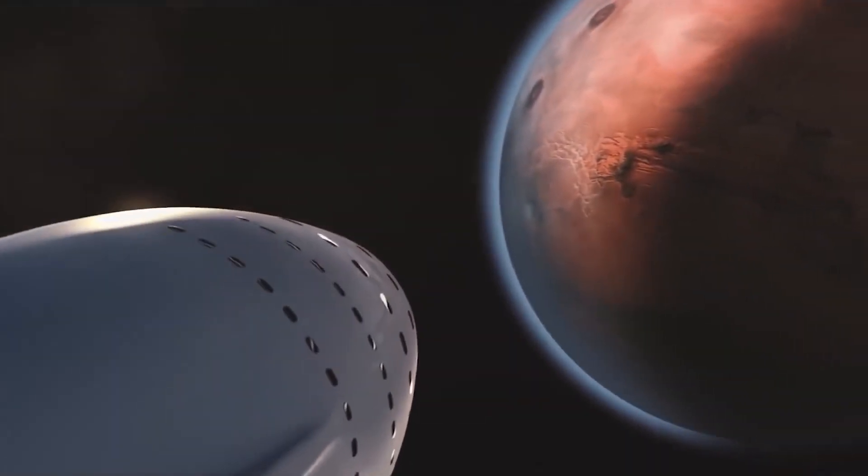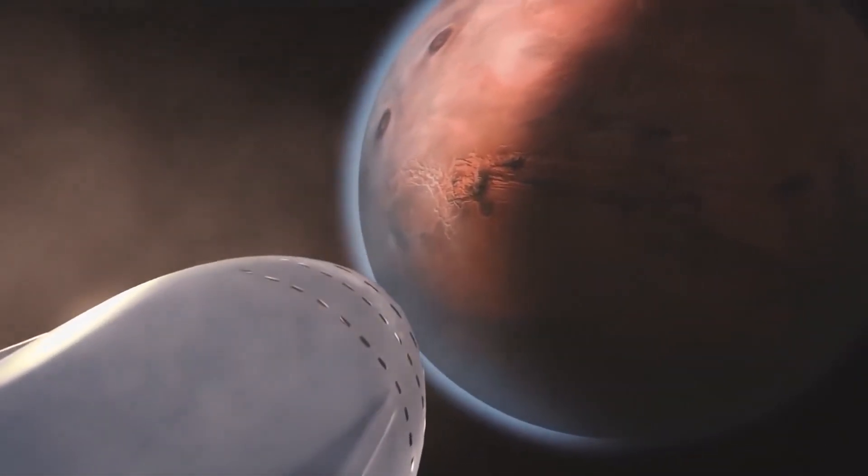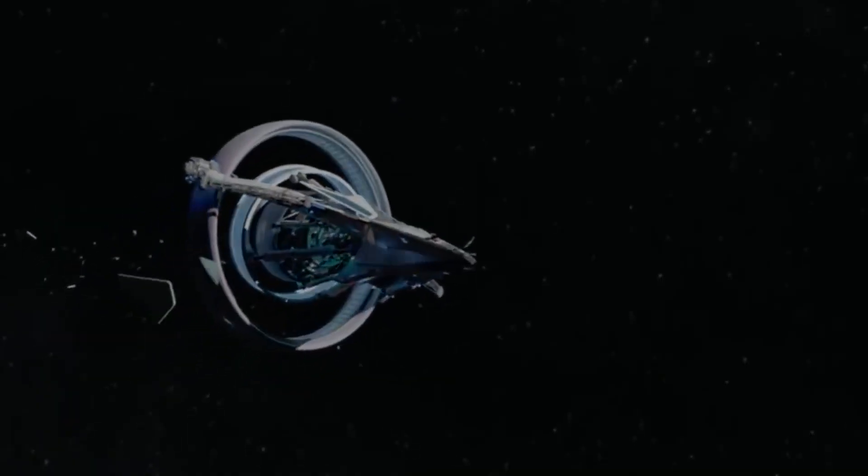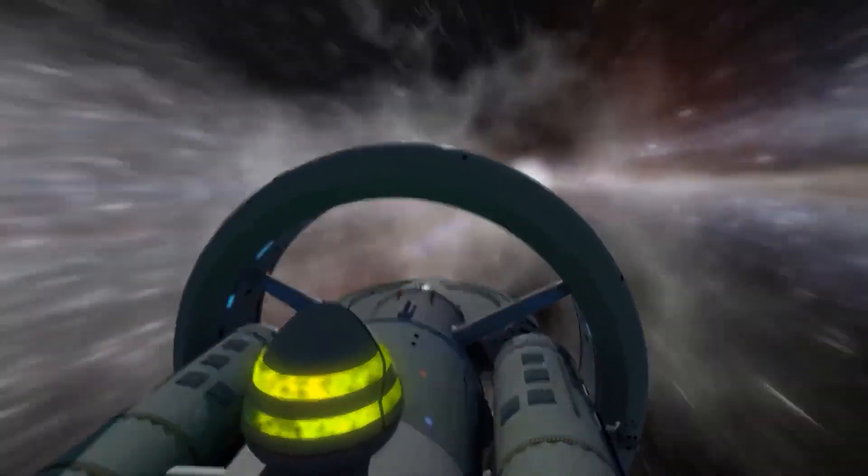To slow down the descent in previous landings on Mars, rockets were fired towards the ground. If the new light-speed rockets will not use thrusters, how are they going to land successfully?